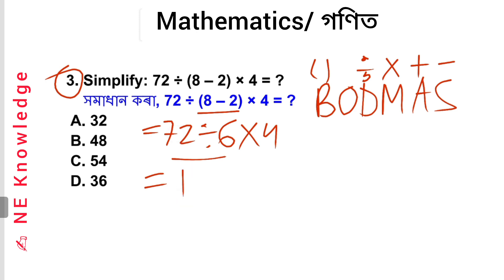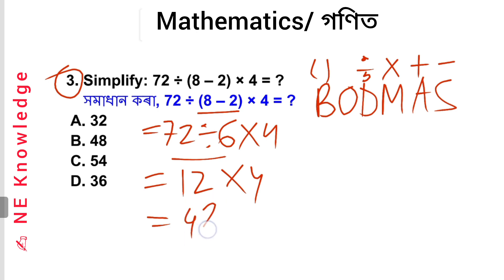6 is equal to 6. 12 is equal to 6. 12 × 6 is equal to 72. And 4 × 12 is equal to 48. So option B is correct.